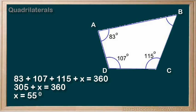If we are given three angles in a quadrilateral, we can calculate the fourth. 83 plus 107 plus 115 plus the unknown angle equals 360 degrees.